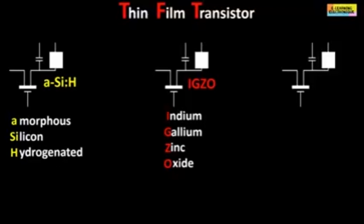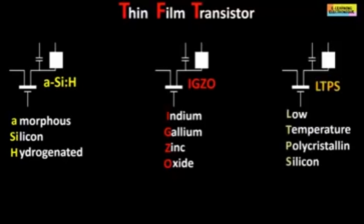The advantage of IGZO technology is that this alloy allows more light to pass through, which reduces energy consumption by reducing the light intensity of the backlight. The size of TFTs in IGZO are also smaller, allowing more pixels to be placed in a panel and improving display resolution. The third technology is called LTPS, which stands for Low Temperature Polycrystalline Silicon.